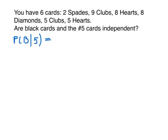The numerator is all the cards that are black and number five at the same time. That's the five of clubs — only one. Out of the total number of five cards, how many five cards are there? We have two. So the probability is one-half.